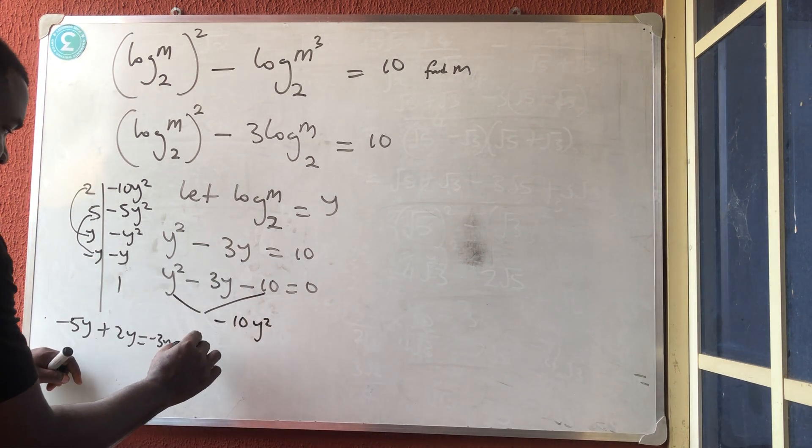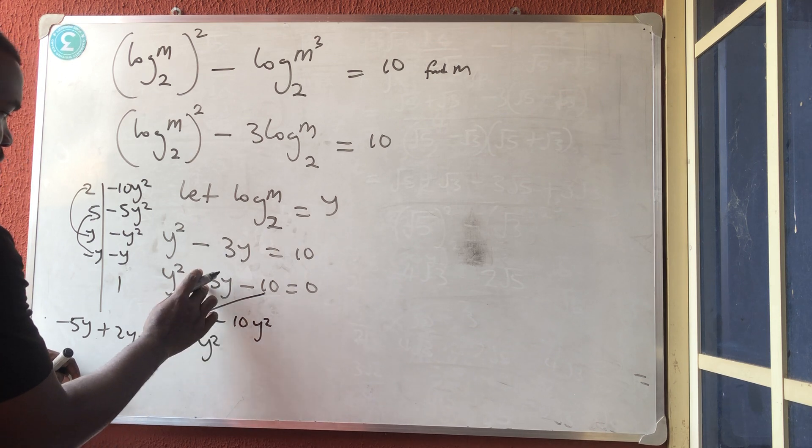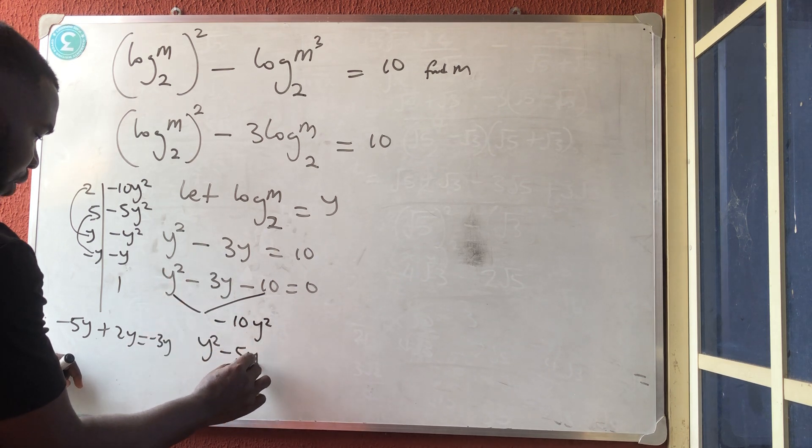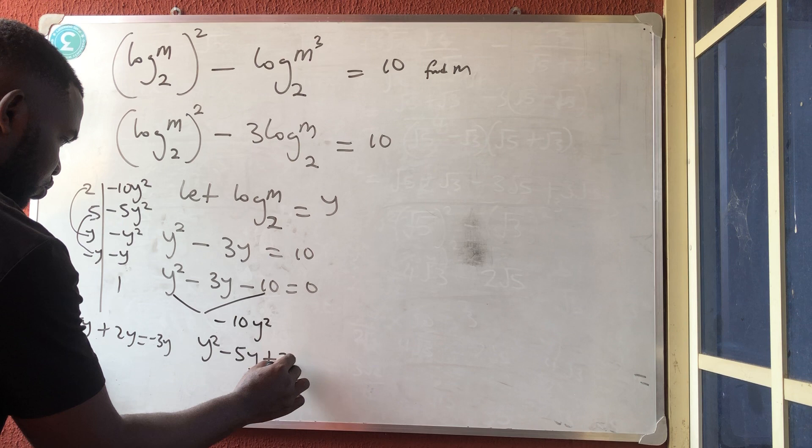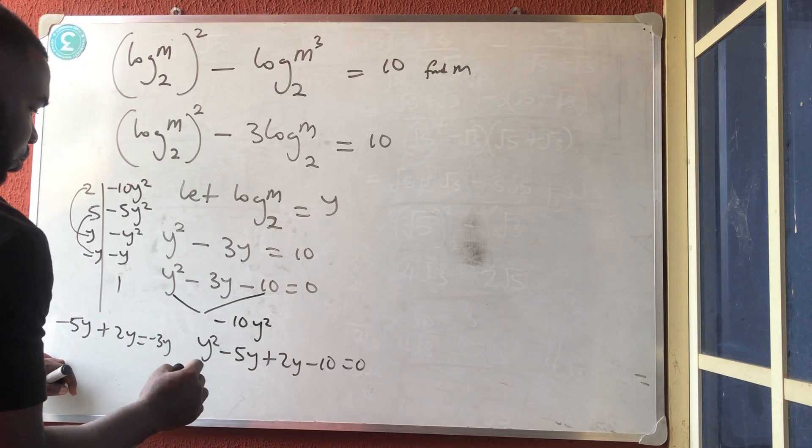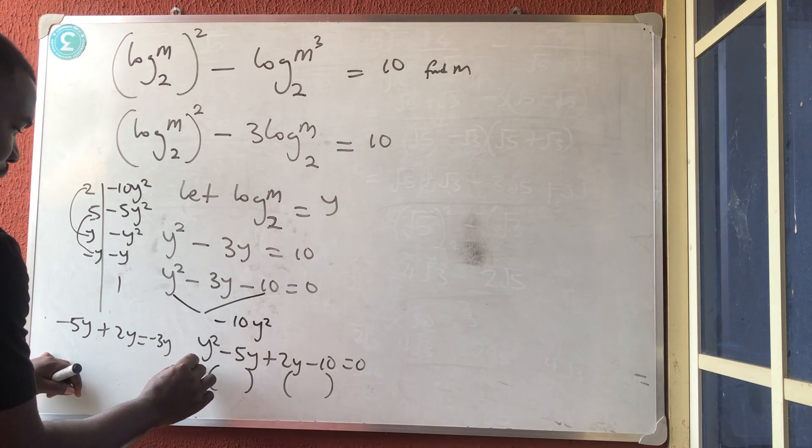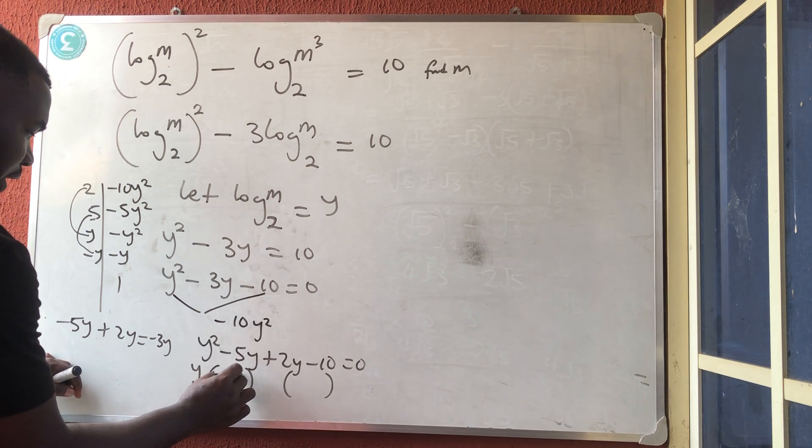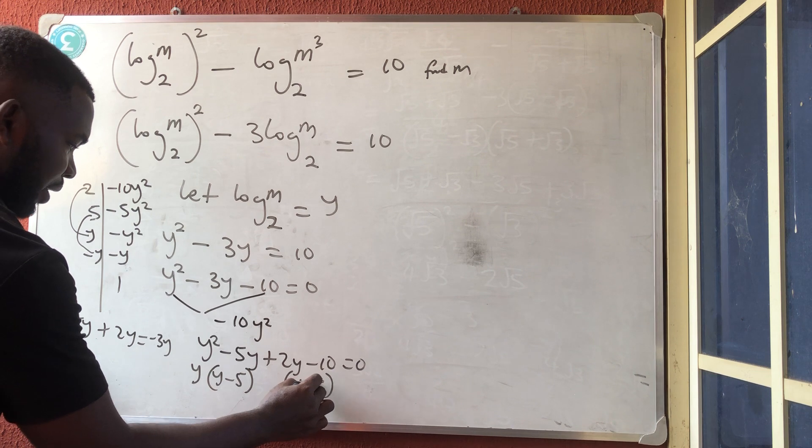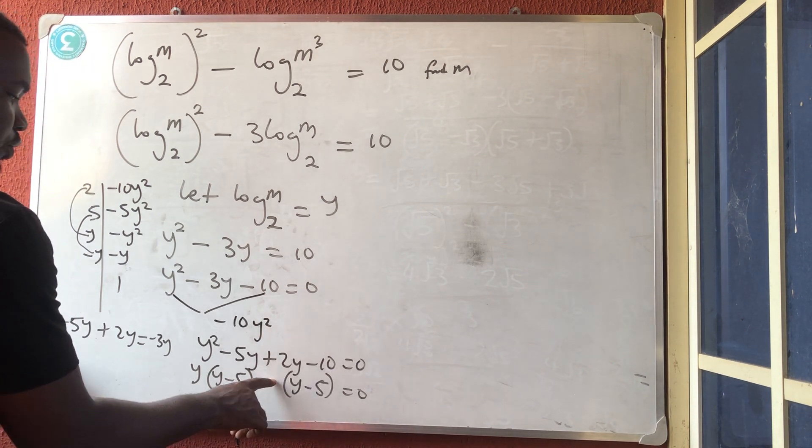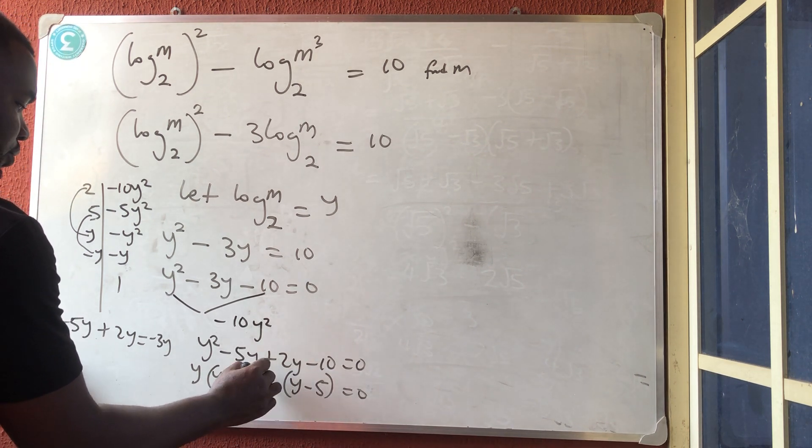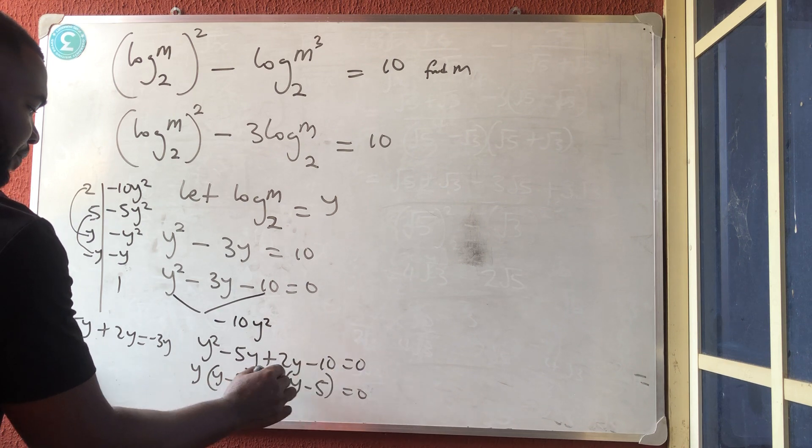So I'm having y squared. Instead of putting this, I'm putting minus 5y plus 2y minus 10 is equal to 0. So what do we have now? Open two brackets. So I'm having y outside, y minus 5. The same thing here, y minus 5 is equal to 0. How do you get the person outside? Minus minus plus 10 divided by 5 is 2.